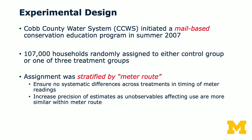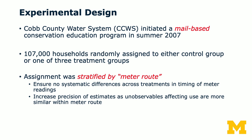The Cobb County Water System initiated a mail-based conservation education program in the summer of 2007 and partnered with the researchers. They have 107,000 households randomly assigned to either the control group or one of three treatment groups. This experiment uses stratified random assignment, which increases statistical power. The assignment was stratified by meter routes, ensuring no systematic difference across treatments in the timing of meter readings, and also increases the precision of estimates.